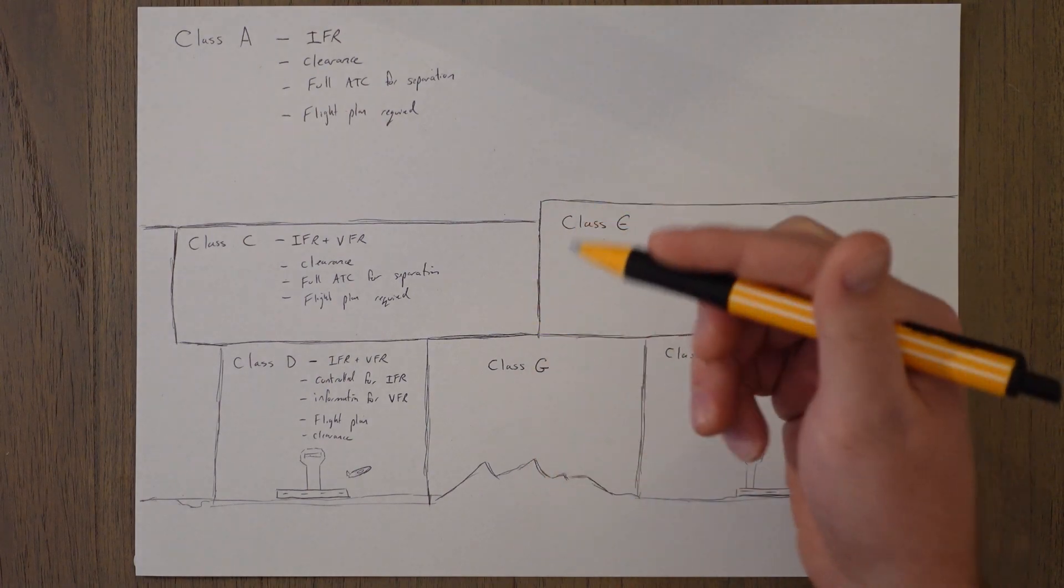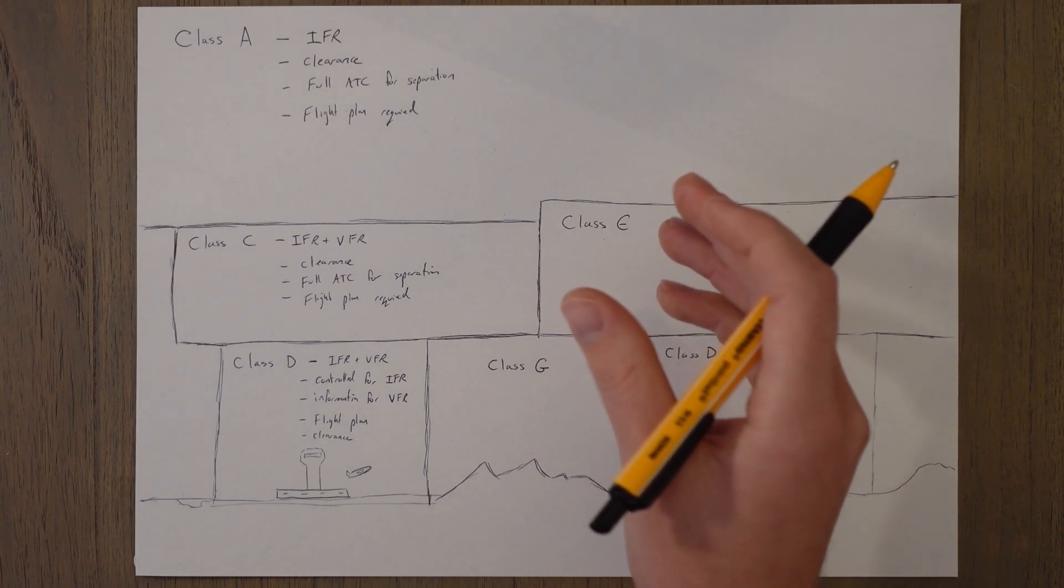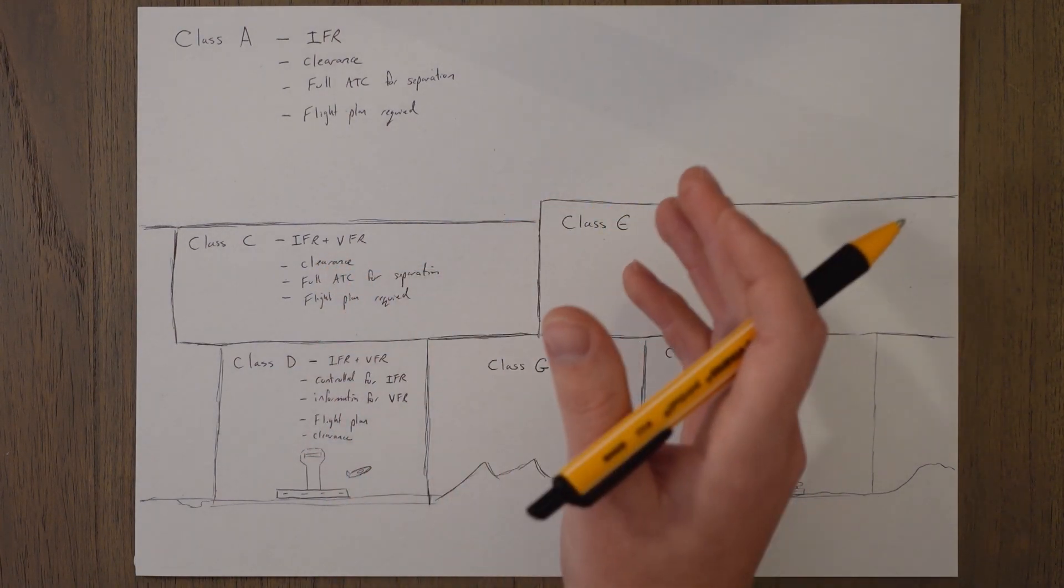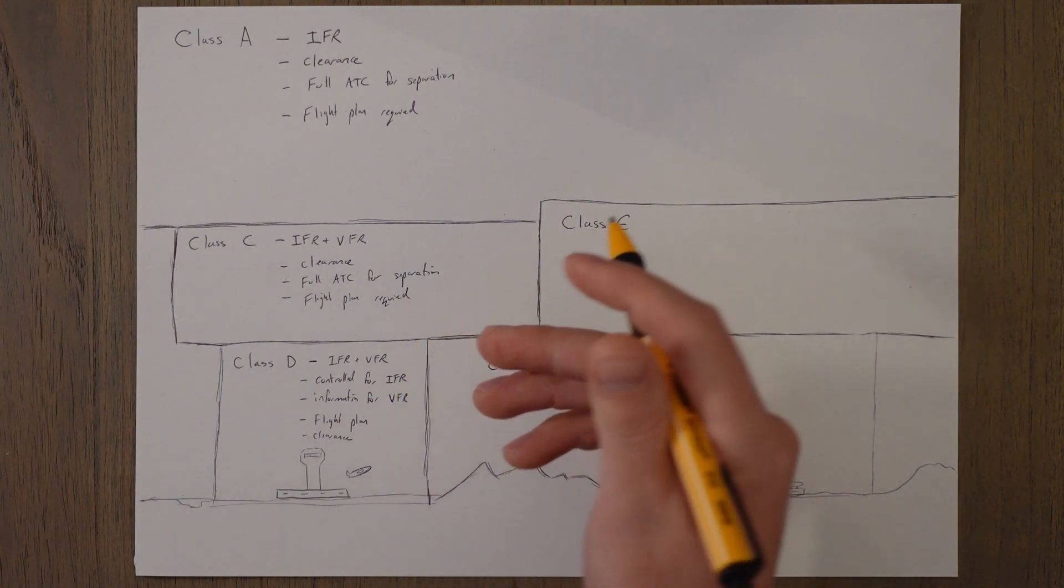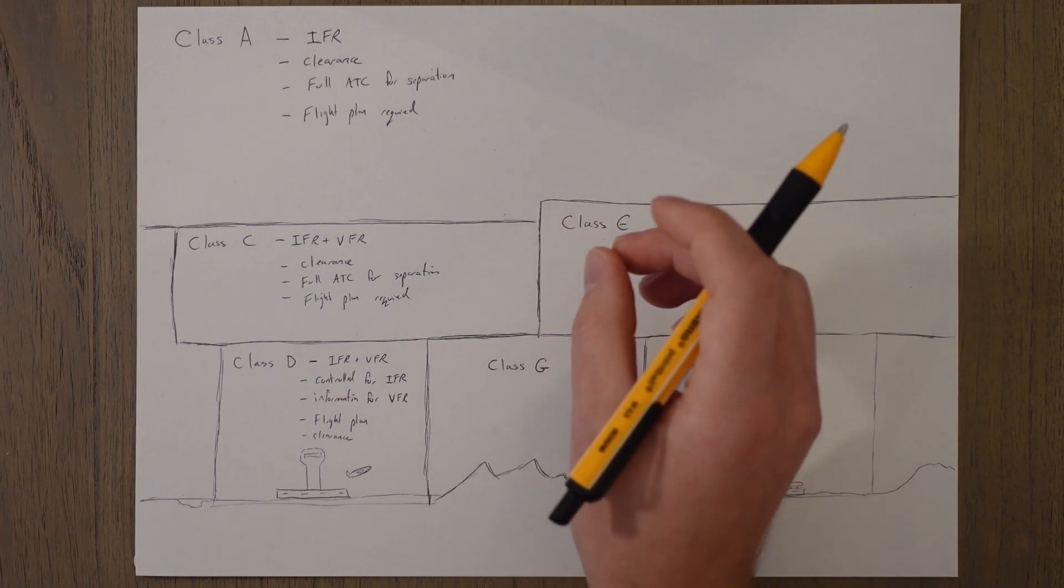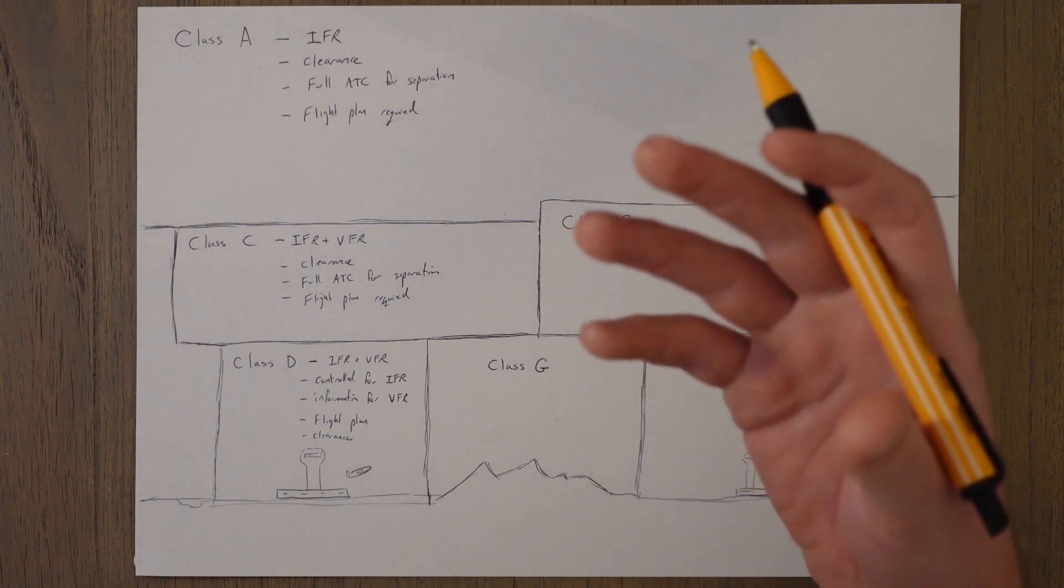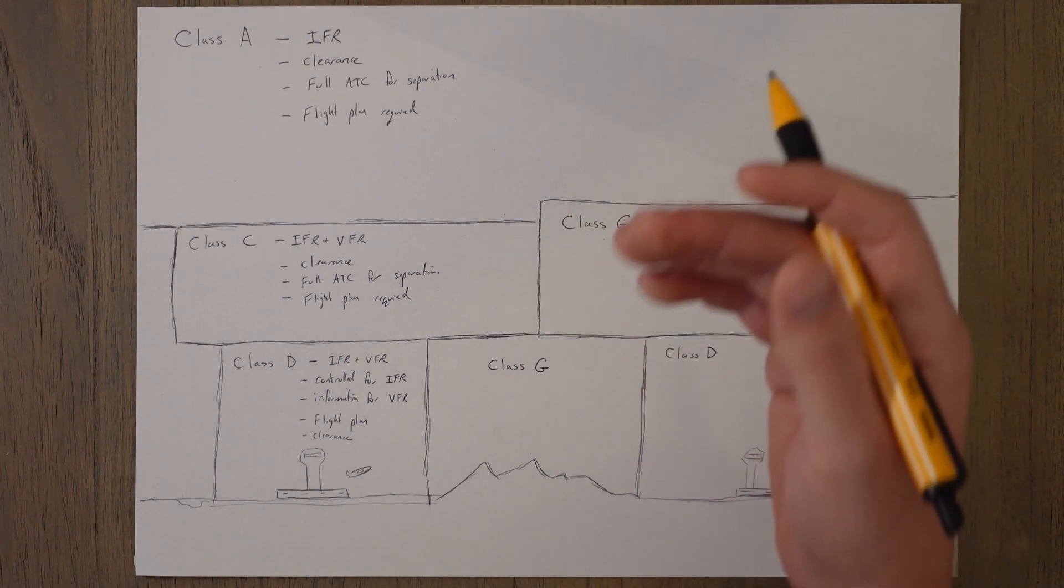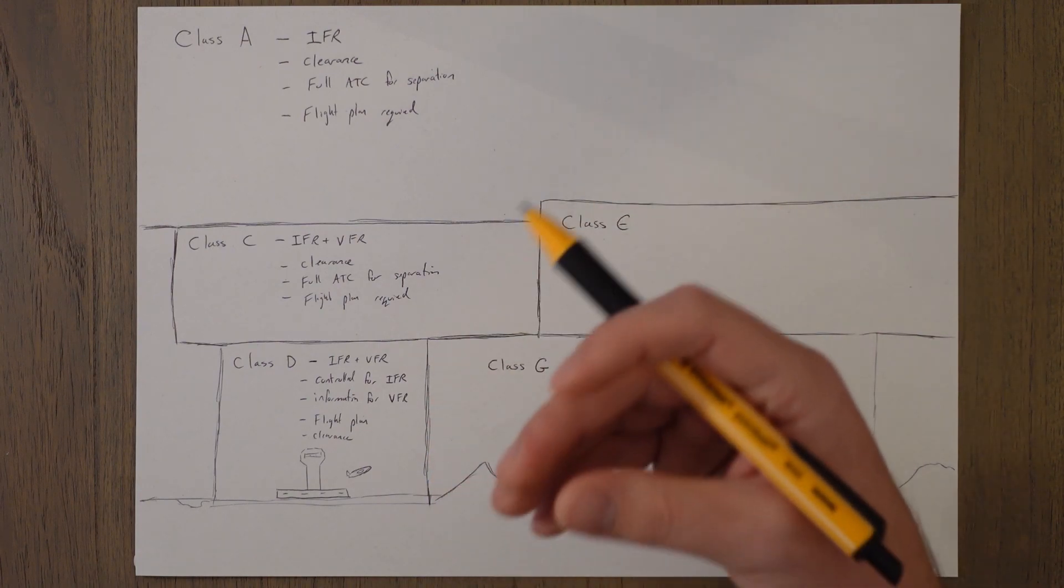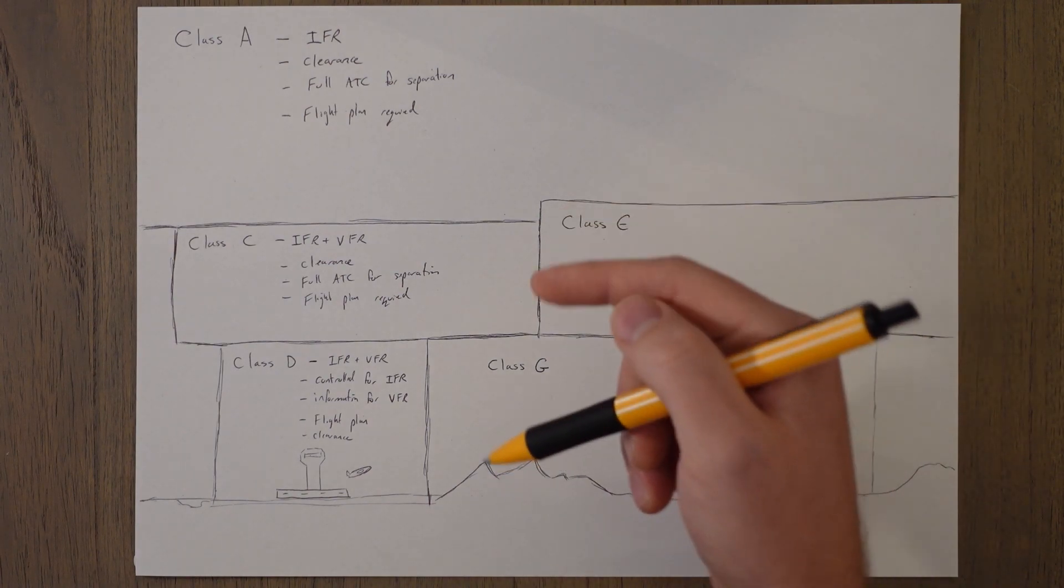VFR have to keep clear of other traffic themselves. IFR have to keep clear of other traffic but ATC help them do that. IFR traffic will not be separated from VFR traffic, only IFR and special VFR, but it will be given information such as for your information there's a VFR aircraft crossing at this point to this point at this altitude.